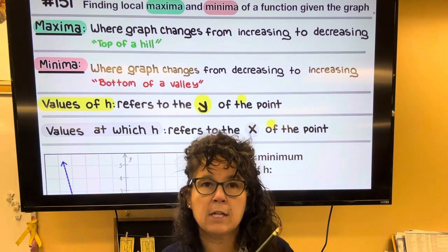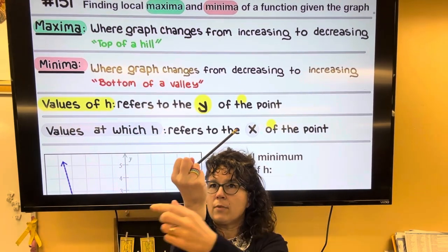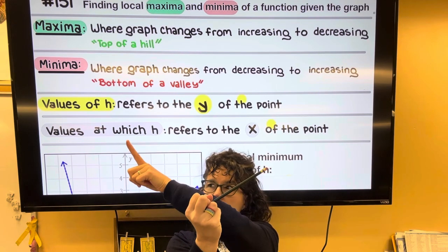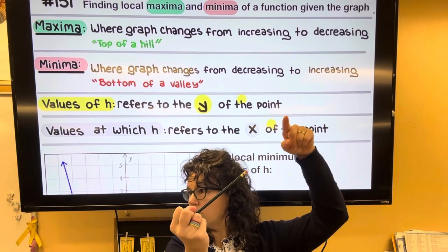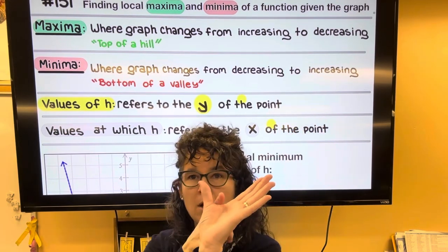But if I just had a line segment that was like this and I had a dot that was like that, this would not be a local minima because the graph's not changing from decreasing to increasing. So it's only going to happen at the bottom of a valley.